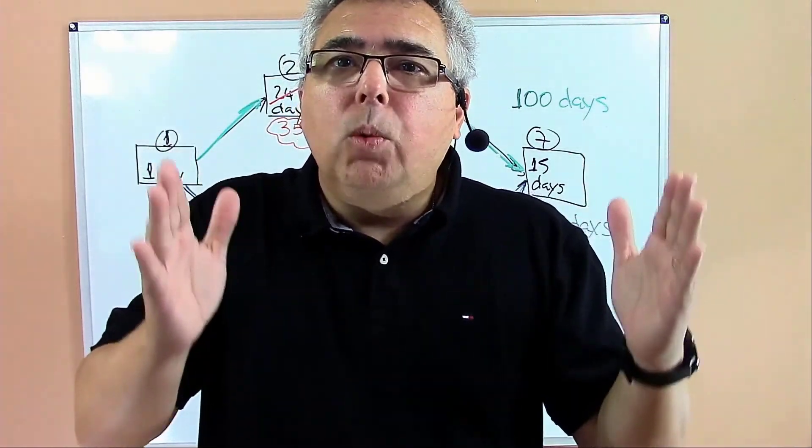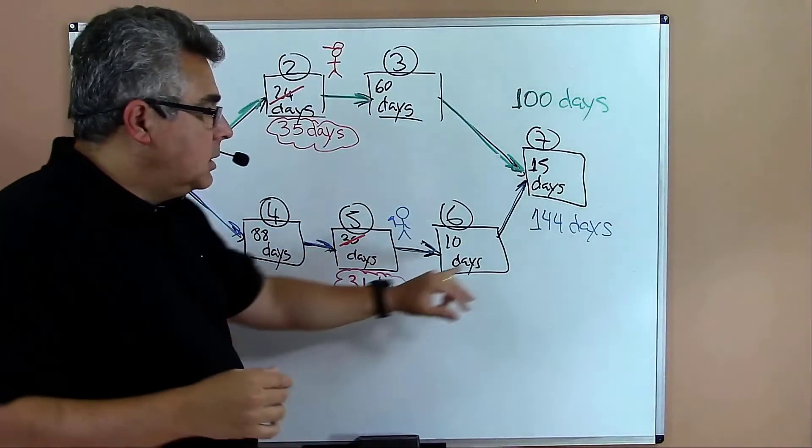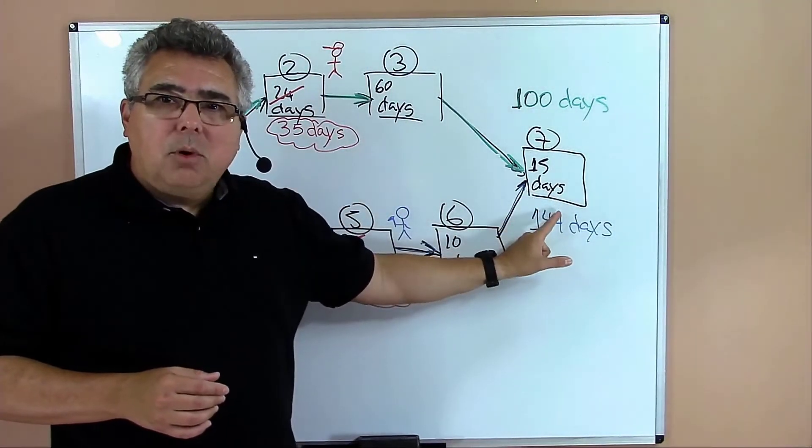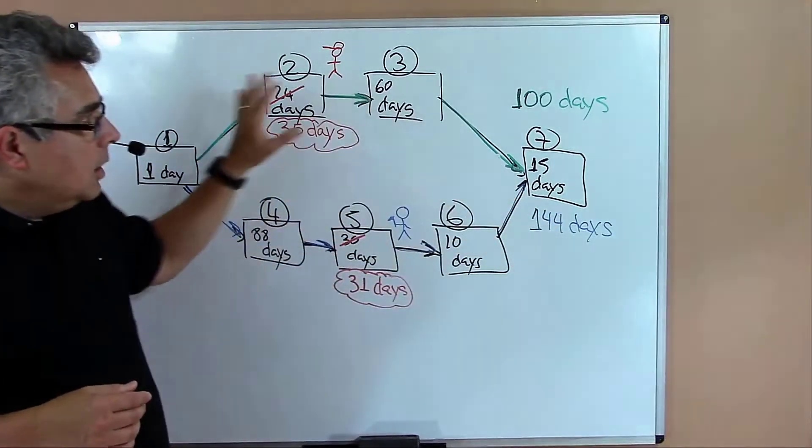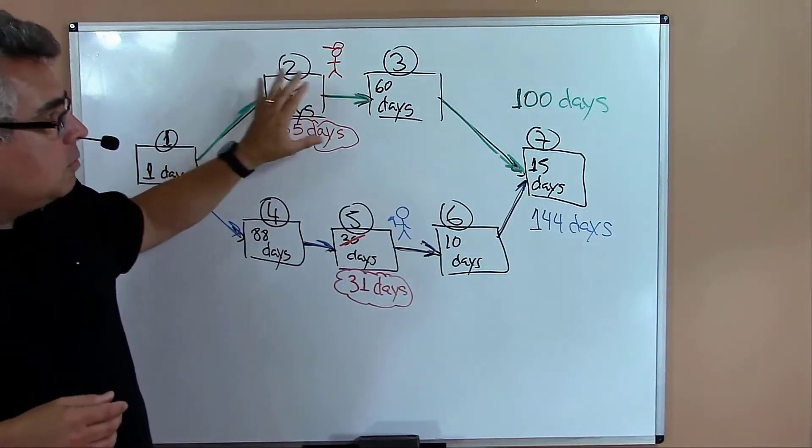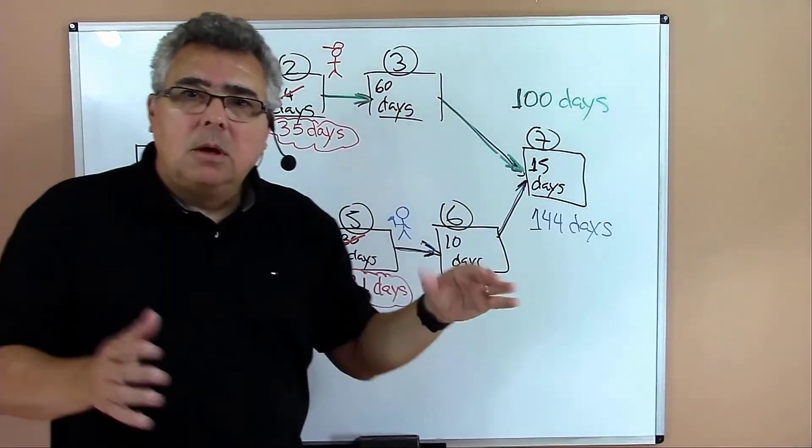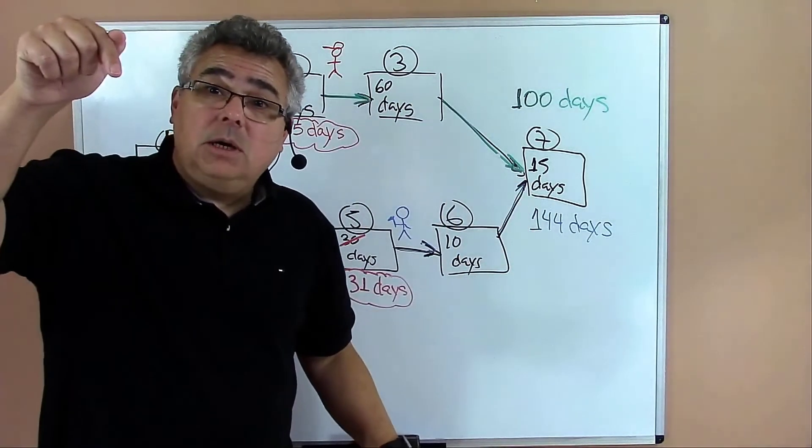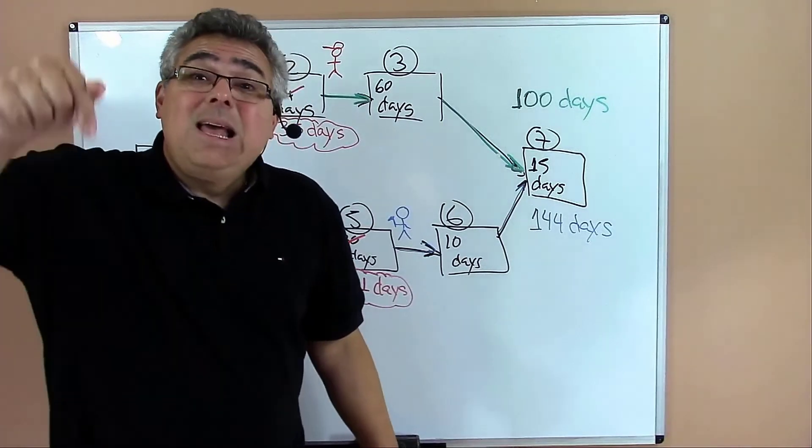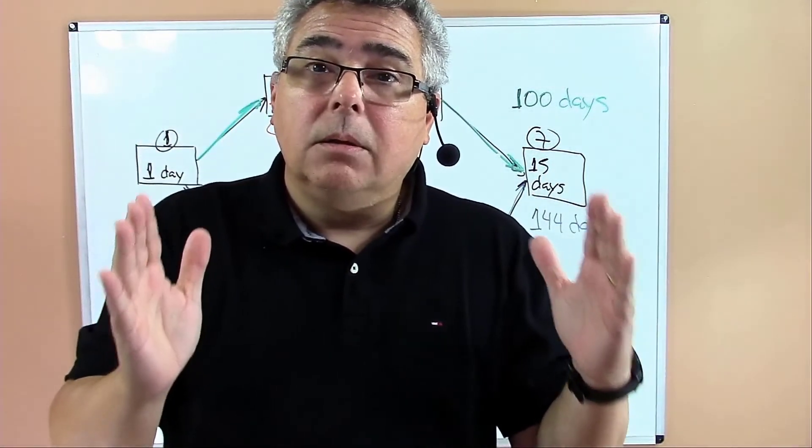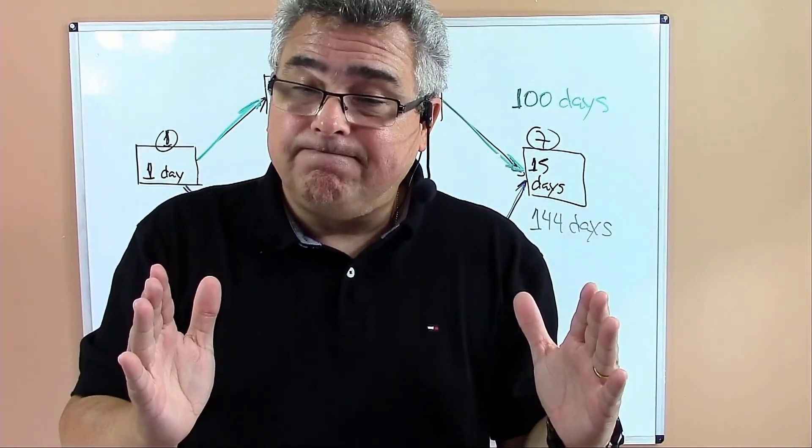And that's why we call that a critical path. It's the longest, and because it's the longest, it determines the project duration. Sometimes you still have room here to start late or to take more time, but in the critical path you have to start on the date and execute within the duration that was established in the plan.